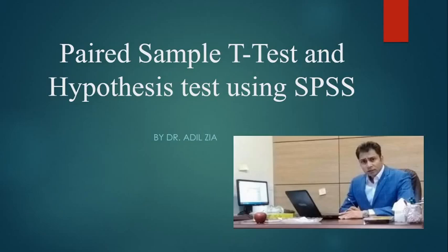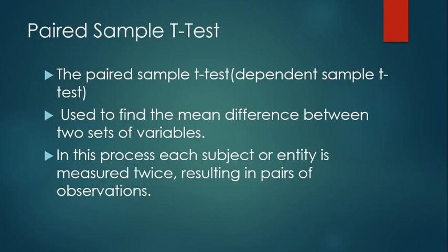Hello everyone. In today's video I will talk about the use of paired sample t-test and how you can use it to test the hypothesis. The paired sample t-test is also known as the dependent sample t-test. This test is used to find the mean difference between two sets of variables. There is a slight difference with the t-test and the ANOVA. I have already made a dedicated video on how and when to use the t-test and ANOVA — the link is provided in the description box.